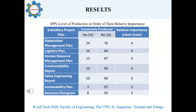Here we have a few more of the subsidiary project plans and their relative importance. A plan such as the value engineering report, rated at level four — important — is only commonly produced at 10%. These numbers confirm that regardless of the high importance of all these plans, the required level of production for the success of our projects is being neglected.